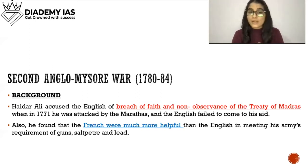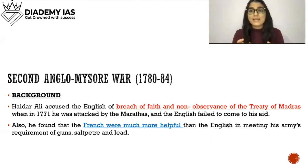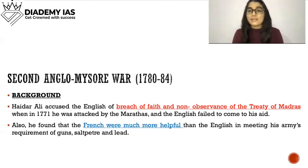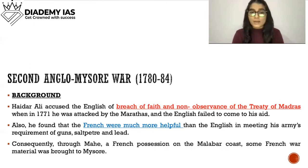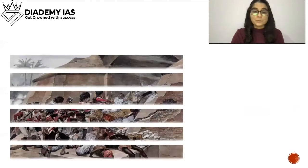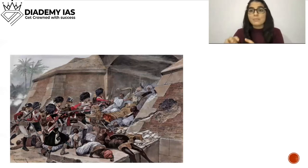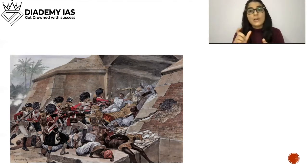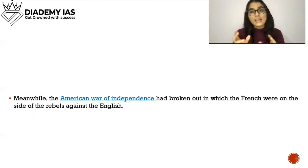Also, Hyder Ali found that the French were much more helpful than the English in meeting his army's requirements of guns and ammunition. Consequently, through Mahe, a French possession on the Malabar coast, some French war material was brought to Mysore. Hyder Ali became closer to the French. Additionally, the American War of Independence had set the French against the English, making Hyder Ali's friendship with the French a further concern.